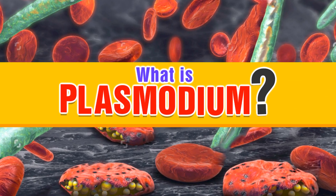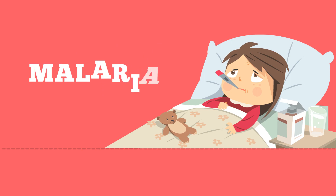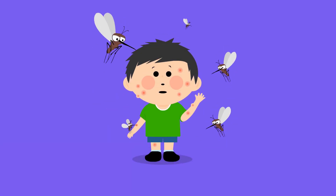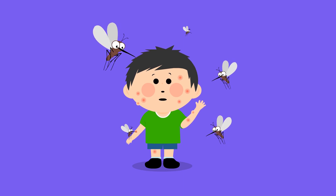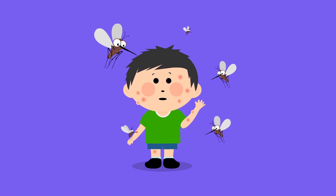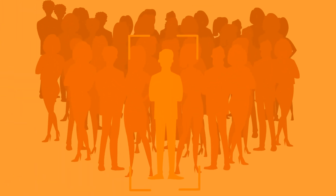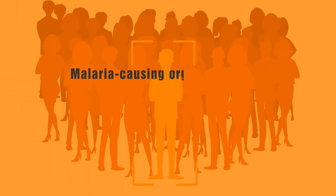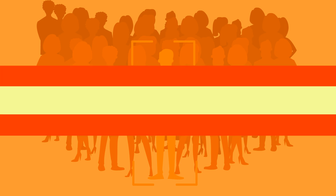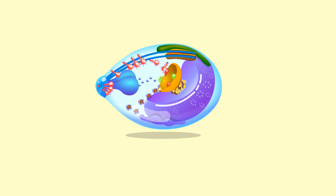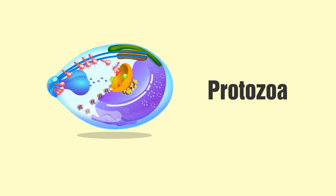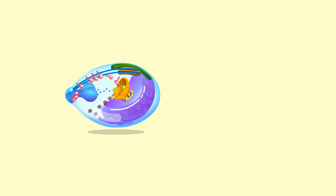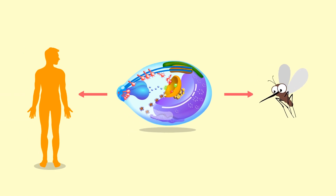What is Plasmodium? All of us know about malaria, a disease man has been fighting for many decades. Malaria is a mosquito-borne disease caused by a Plasmodium parasite and spread by the Anopheles mosquito. In this video we will discuss the malaria-causing organism called Plasmodium. Plasmodium is a genus belonging to the parasitic group of protozoa, and it completes its life cycle with the help of two living organisms: mosquitoes and humans.